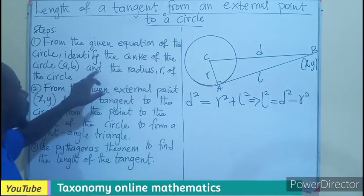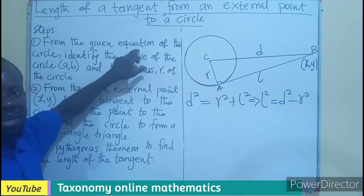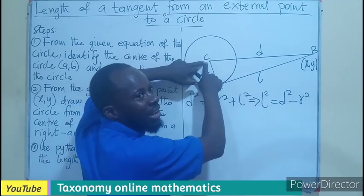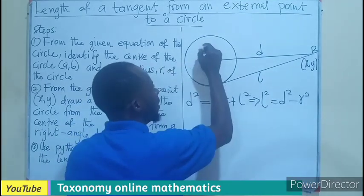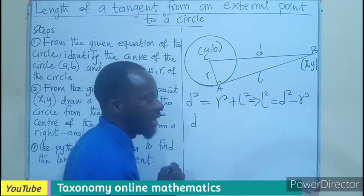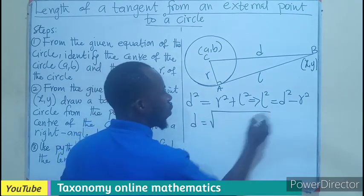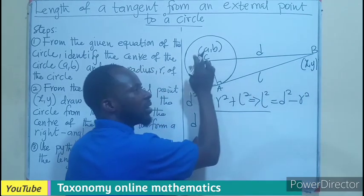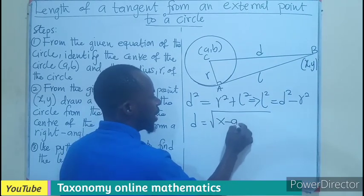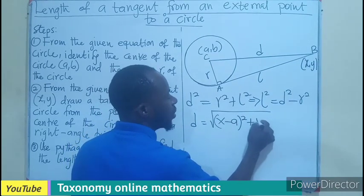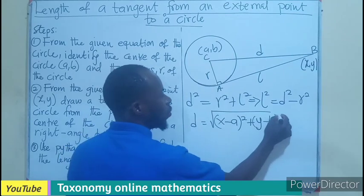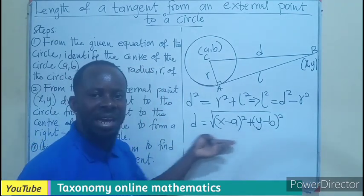Don't forget, the radius will be derived from the equation of the circle. And how do we get this distance? After we get the center, then the distance. If I have the point A,B, the distance is going to be the square root of X minus A all squared plus Y minus B all squared. The Y values will be subtracted, the X values will be subtracted. So this is how I'll find the distance.